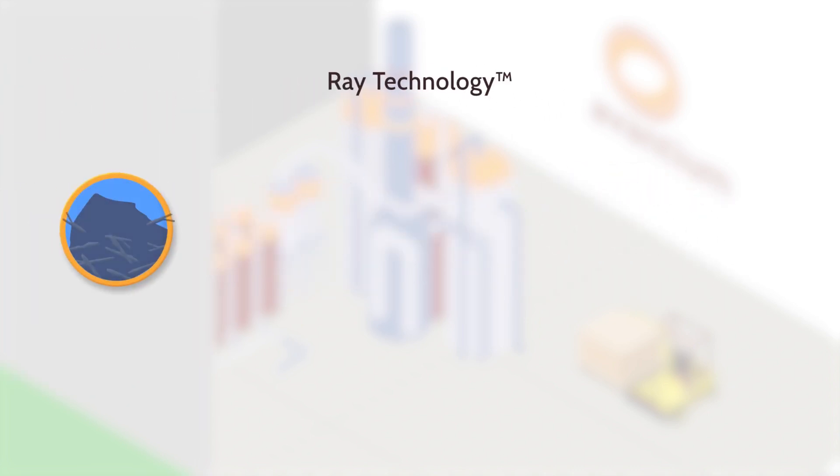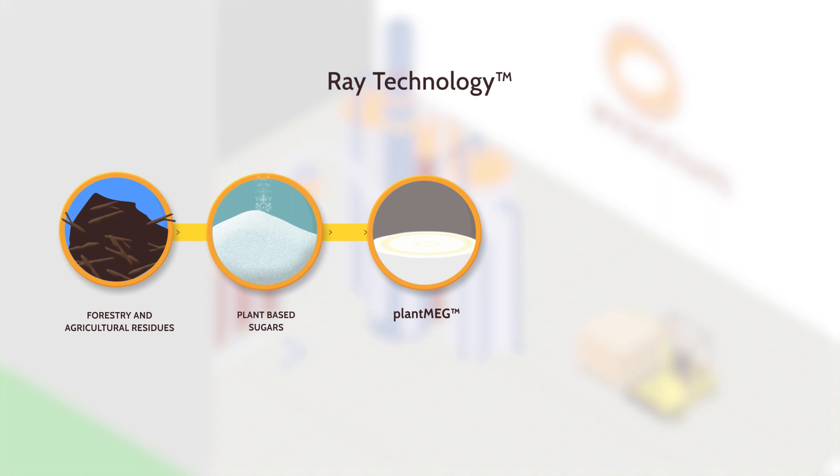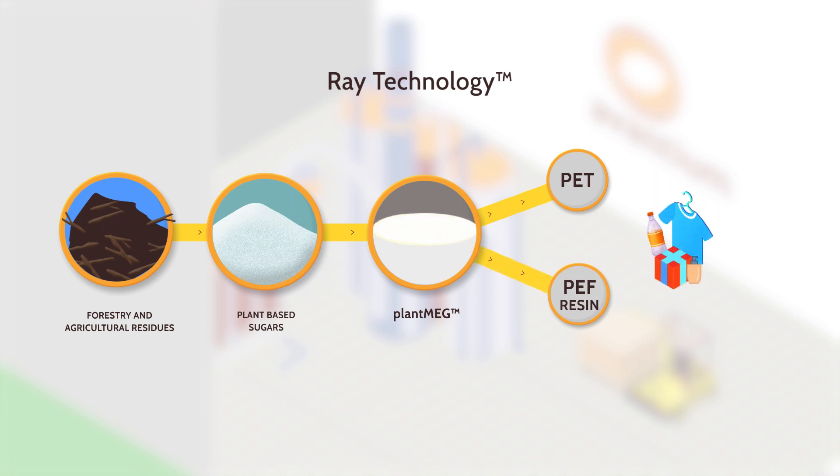Our RAY technology is a highly efficient process that converts plant-based sugars into RAY plant MEG. This is an important chemical building block for PET or PEF resin for bottles, packaging, textiles, furniture and more.